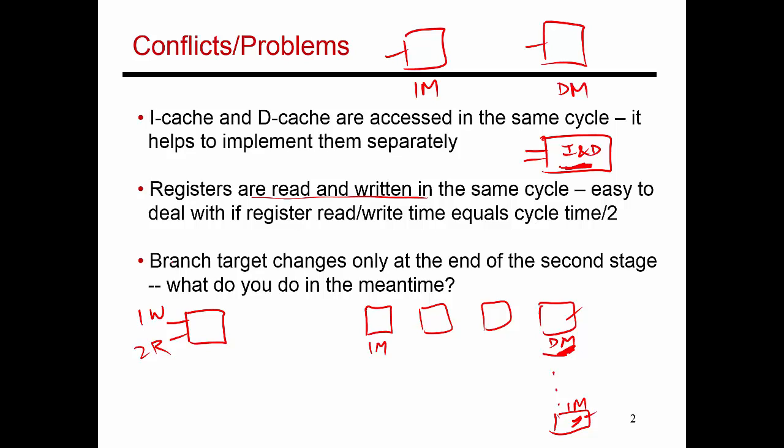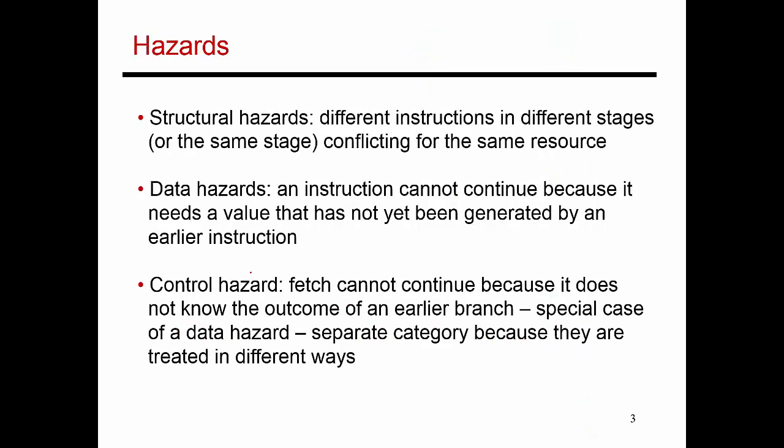Another possible problem is that the branch target only changes at the end of the second stage. By making aggressive assumptions and doing a lot of work in the second stage, you can finish the branch instruction as early as the second stage. But even then, one cycle elapses where you're not sure what to fetch. These problems are referred to as hazards. A structural hazard occurs when multiple instructions try to access the same resource in the same cycle. The easiest fix is to provide more hardware resources. Separating unified storage into separate instruction memory and data memory is one example of handling a structural hazard.